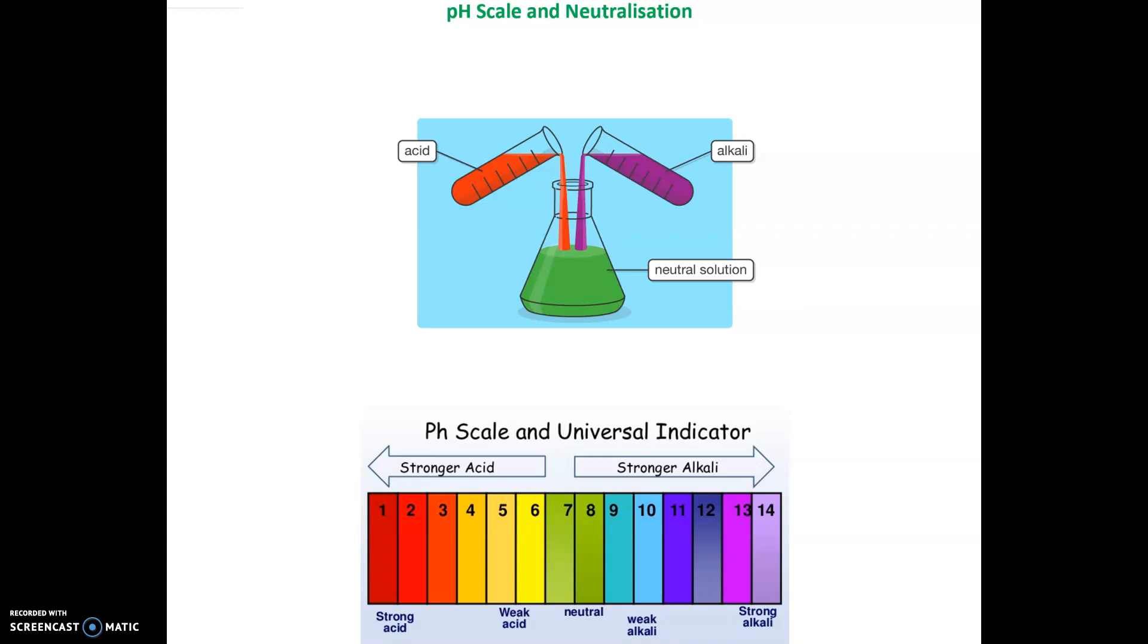The three common laboratory acids you need to know about are hydrochloric acid (HCl), sulfuric acid (H2SO4), and nitric acid (HNO3). The common laboratory alkaline solution is sodium hydroxide.